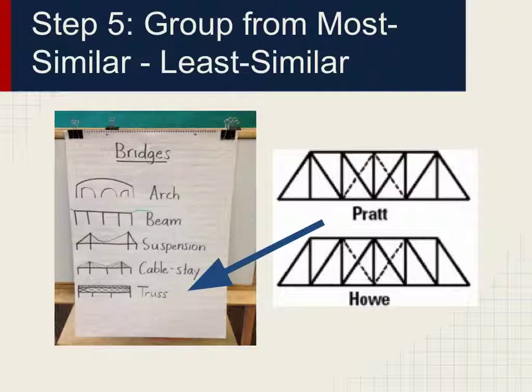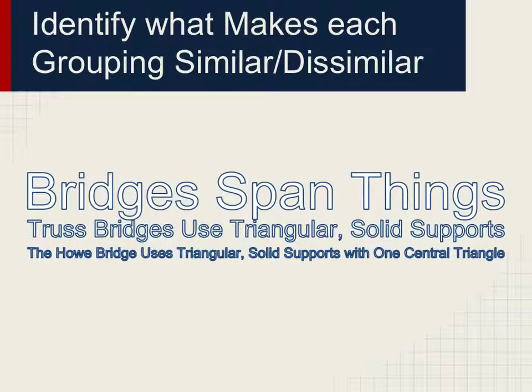Then again, maybe according to your system they won't. Now you need to identify what makes each group similar or dissimilar to others. Bridges span things — that's the biggest umbrella that you can fit every type of bridge under.